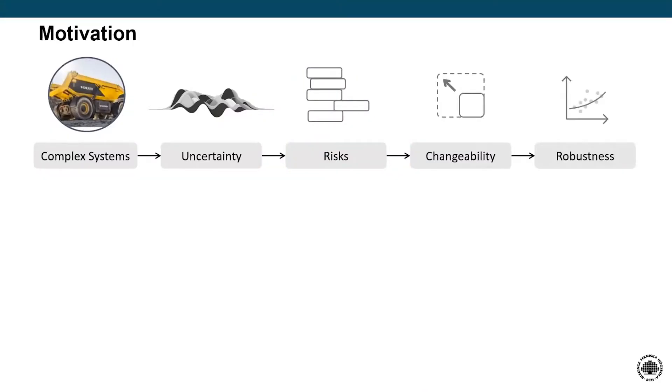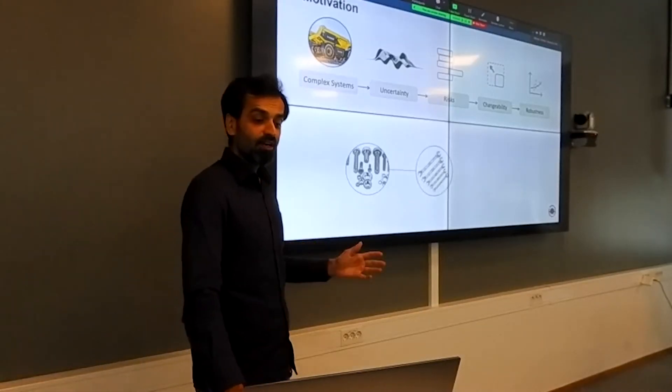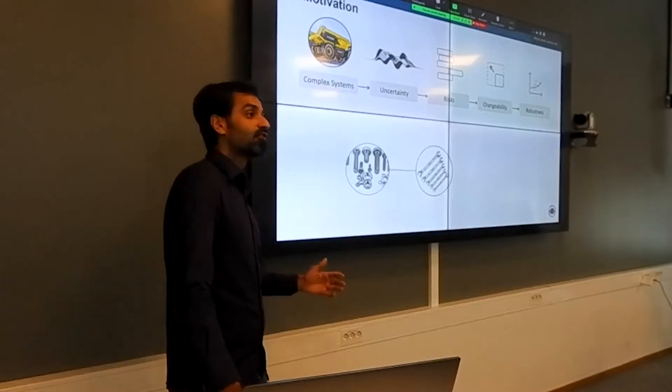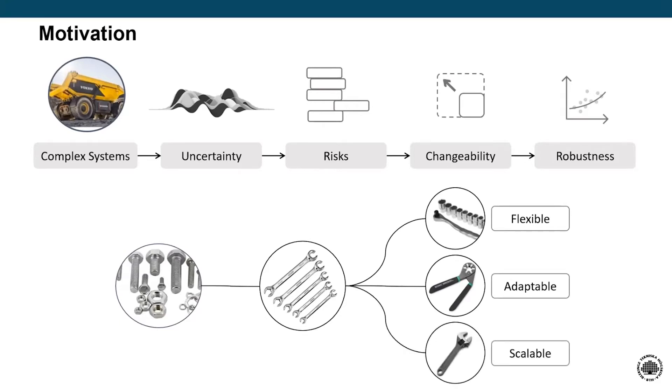This picture basically explains why we need a changeable system, because we want to avoid the risks. A simple example that I like to give to everyone when I speak is the example of nuts and bolts. We have so many different kinds of bolts and nuts that don't open, and then we have so many different tools. So we as engineers have come up with innovative solutions to that. For example, this is a kind of flexible solution. This is an adaptable solution that just adapts to the size of the bolt that you want to open, and then this is an example of a scalable one.